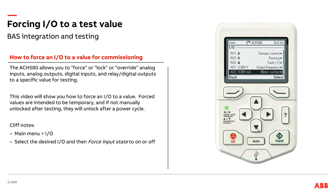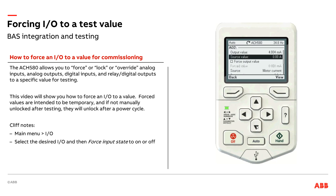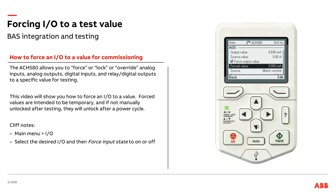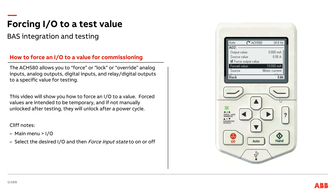I can do the same thing with analog outputs. Just like the analog input where I commanded a specific voltage, with the analog output I can command a specific value. In this case it will be current, because I have it set up for a 4 to 20 milliamp signal. I'm going to force it to be 10 milliamps. Now I can double-check on my building automation system whether I'm indeed seeing 10 milliamps — assuming they have an analog output wired from the drive back to the BAS, programmed here for motor current status. I'll go ahead and release that.